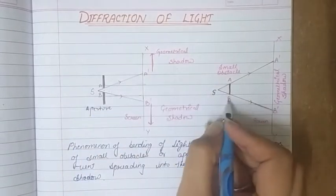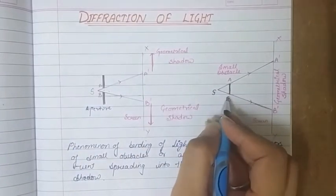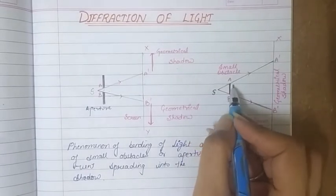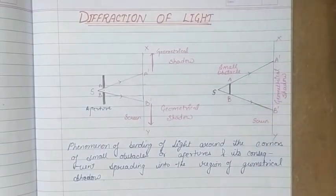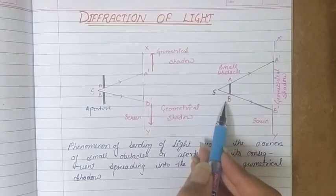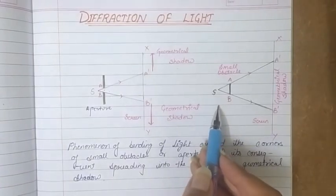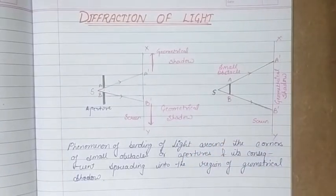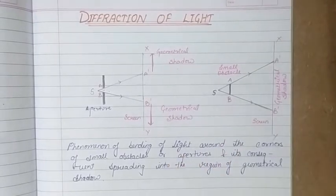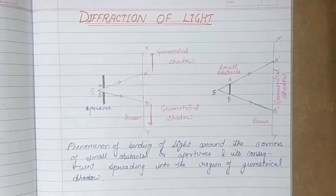Now if there is an obstacle instead of an aperture — obstacle A-B — the light ray should give us a geometrical shadow A'-B', a darker shadow. However, when obstacle A-B is placed in the path of light, we were expecting a dark shadow A'-B' on the screen. But when we observe it, we get a circular bright band at the center surrounded by dark and bright fringes alternately.